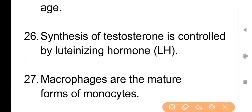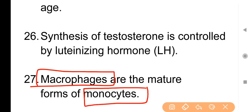Point No. 27: Macrophages are the mature form of monocytes. Monocytes की mature form को macrophages कहते हैं, और monocytes basically WBC का एक प्रकार है।